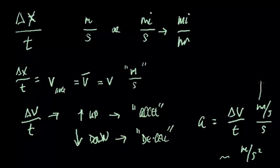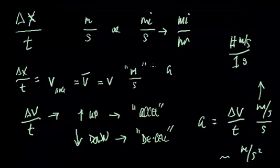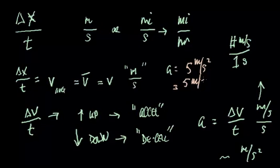But what is acceleration really telling us? I think this is what's important here. It's telling us how many meters per second we are increasing or decreasing our speed per second. So, for example, let's say our acceleration is five meters per second squared. That really means we're increasing by five meters per second every one second because that's a positive.